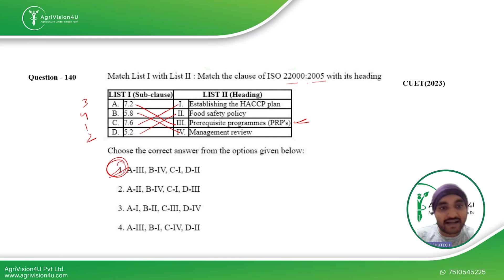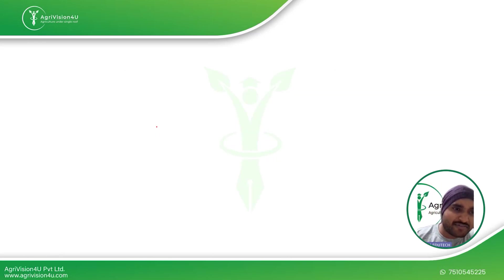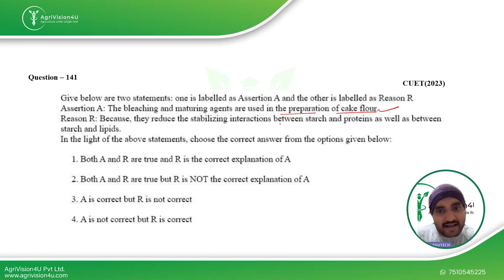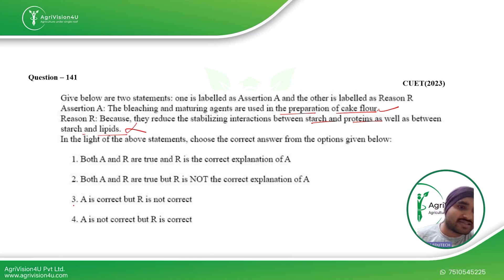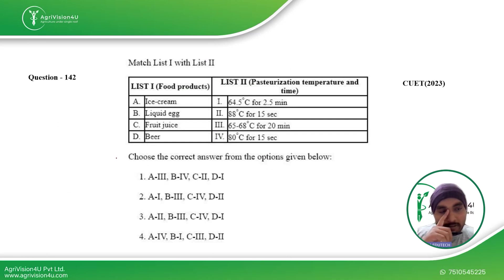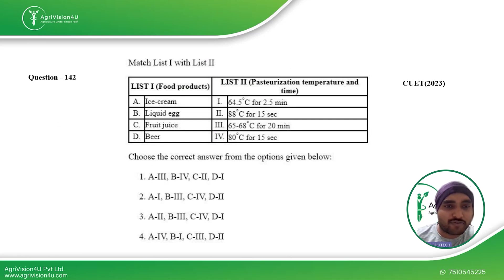Then we have an assertion-reason question. The assertion: bleaching and maturing agents are used in the preparation of flour — yes, that is correct. The reason: they reduce the stabilizing interaction between starch and proteins as well as between starch and lipids — no, this is not correct. So statement A is correct but the reason is incorrect, making the third option the right answer.